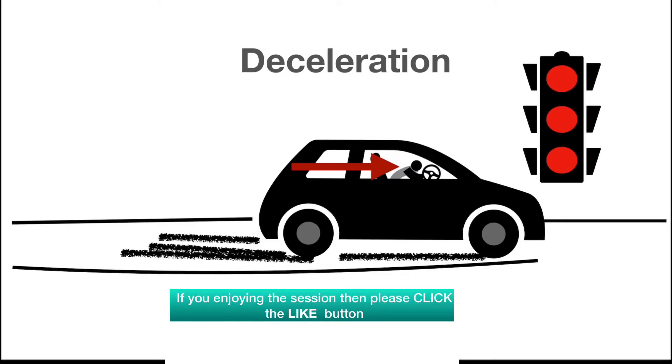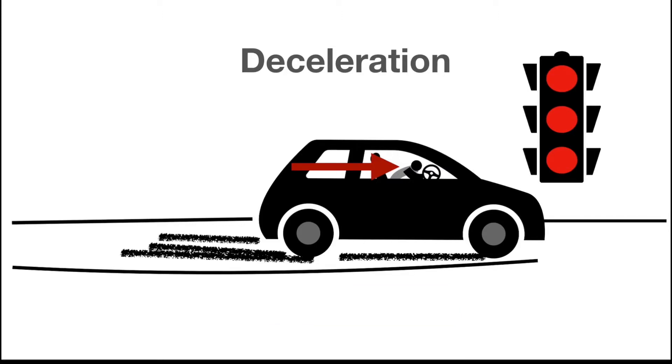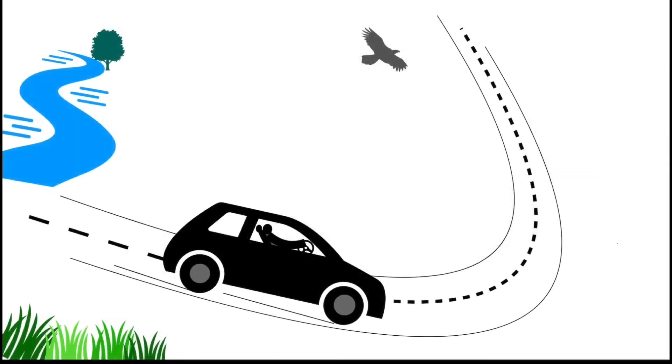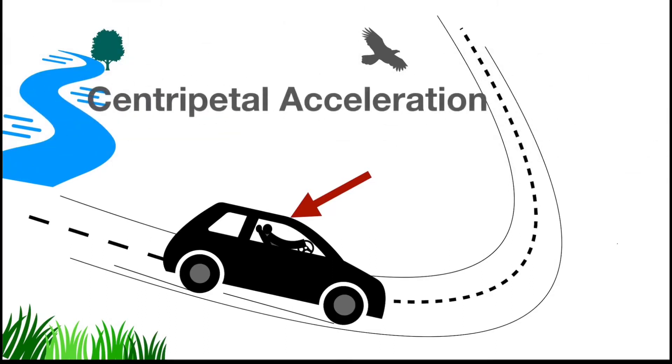Now let's see another example where we check the effect of change in direction. In the third case, you are driving a car with constant speed and you are approaching a turn. At this point, you are turning your steering wheel to take the turn. During this process, you will feel a force which is pushing you outwards. And this is happening because of a phenomenon known as centripetal acceleration.